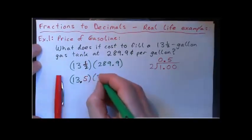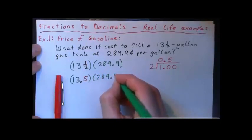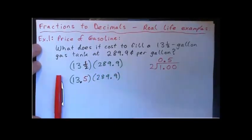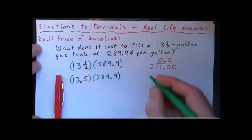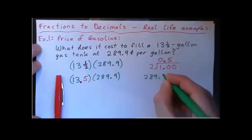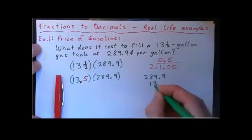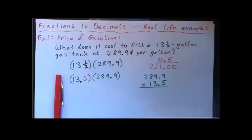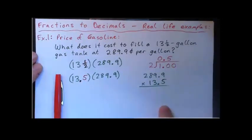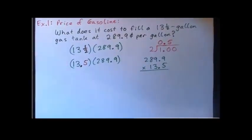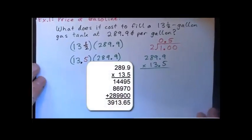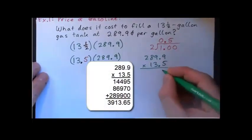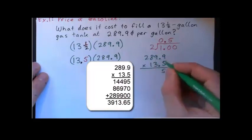So 13 and a half is 13.5, and it's 13.5 times 289.9. We'll go ahead and multiply those decimals. I'll put the big long string of things on top: 289.9, and 13.5 on the bottom. Go ahead and multiply that — press pause, multiply it, and then check your answer with me. Okay, five times nine is forty-five, carry the four. Five times nine is forty-five.